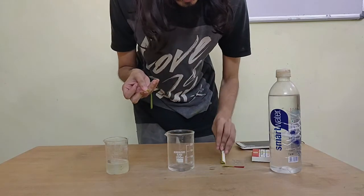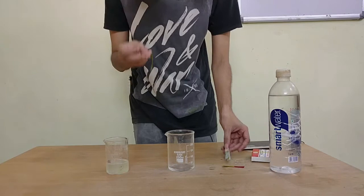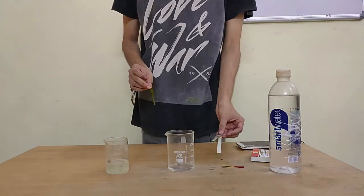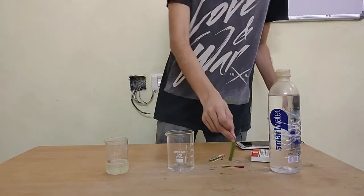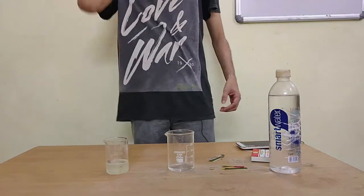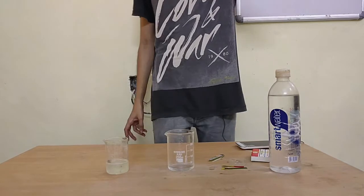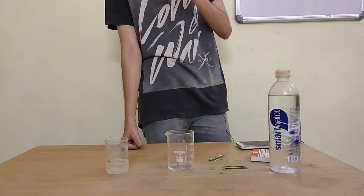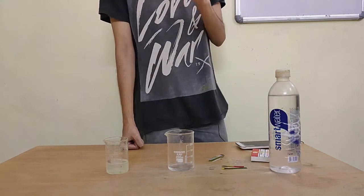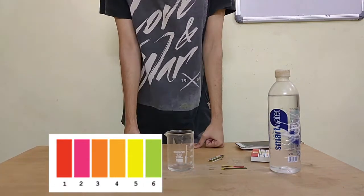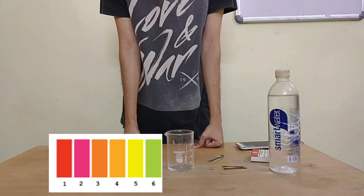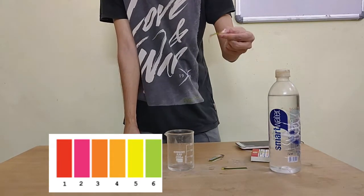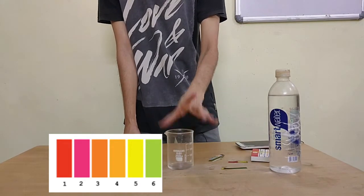It's simply a matter of comparing your indicator color to the listed color. This scale runs from 1 to 14. Whenever something is at 1 or any number below 7, that material is acidic. Since this pink color gave me a 1, I know for sure this is an acid.